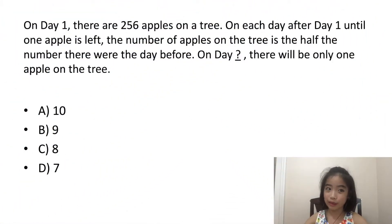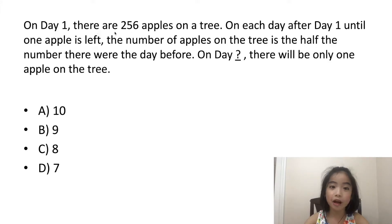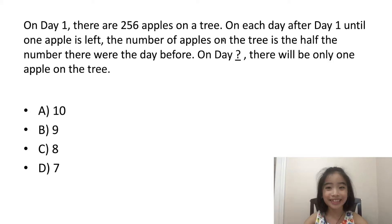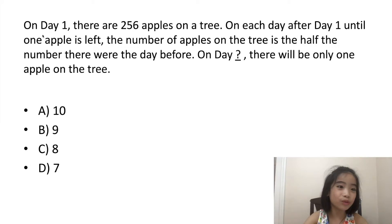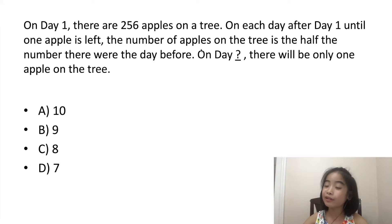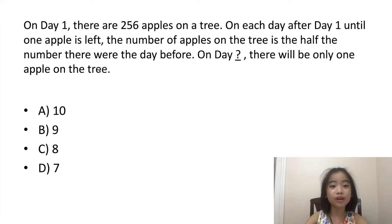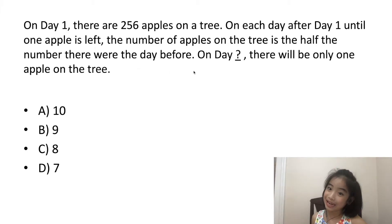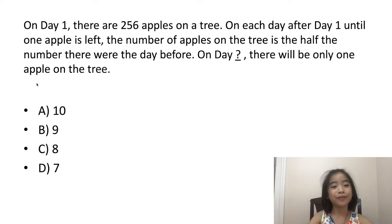So the word problem is: on day one, there are 256 apples on a tree. On each day after day one, until one apple is left, the number of apples on the tree is half the number there were the day before. So on which day will there be only one apple on the tree?